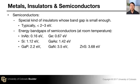So what is a semiconductor then? A semiconductor is a kind of insulator whose band gap is small enough. What is small enough? Typically it is two to three electron volts. There is no strict scientific definition of this limit — this is all empirical. Some people call it a wide band gap semiconductor; others might call it an insulator, and vice versa.